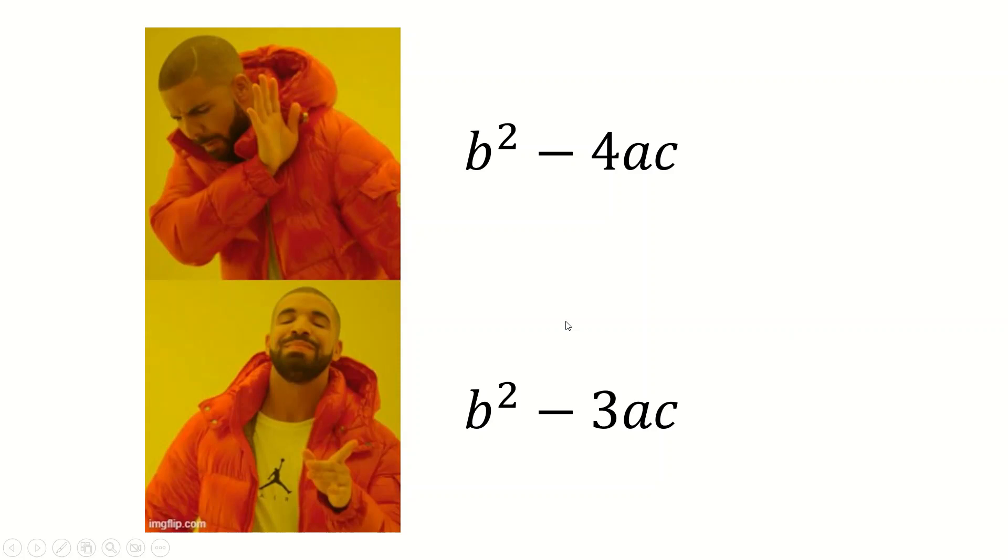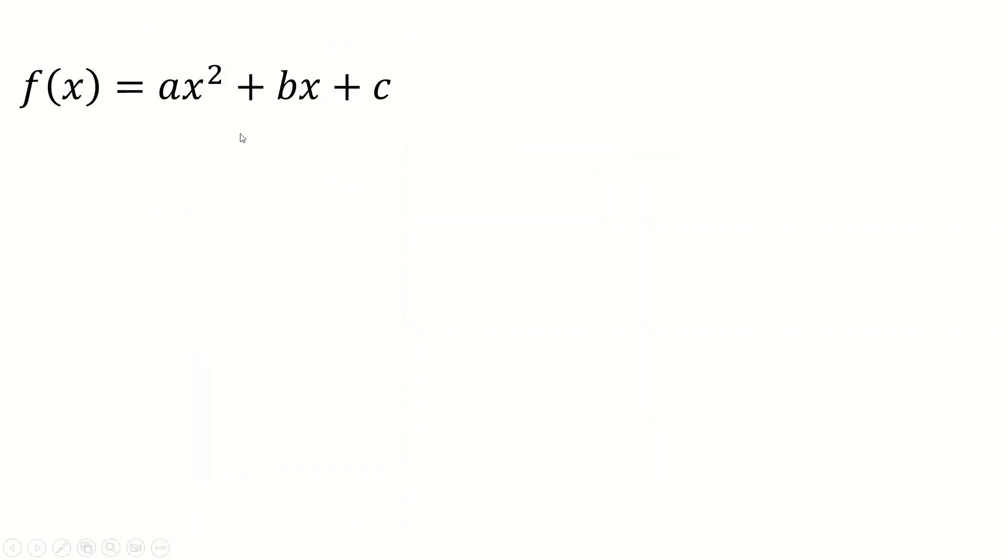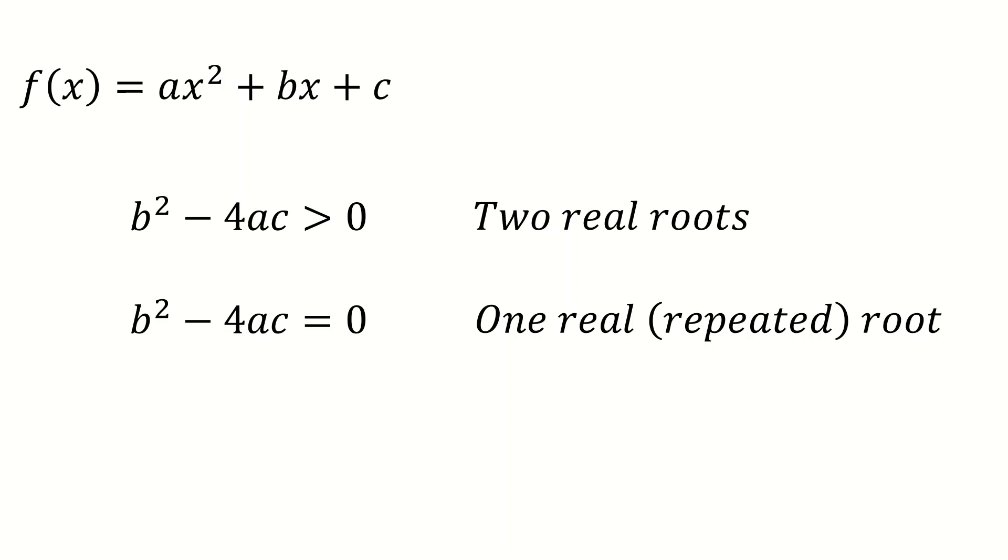b squared minus 3ac. This is the in thing right now, it's so hard right now. So if you have a function that's a quadratic, I'm assuming that we all know what b squared minus 4ac is. If we do this little check, if b squared minus 4ac, with this being a, b, and c, if it's greater than zero, then this quadratic here has two real roots. And if it's less than zero, the quadratic has no real roots. And if it's equal to zero, then it has one real, sometimes called repeated, more usually called repeated roots. And that's pretty basic, we all know this.